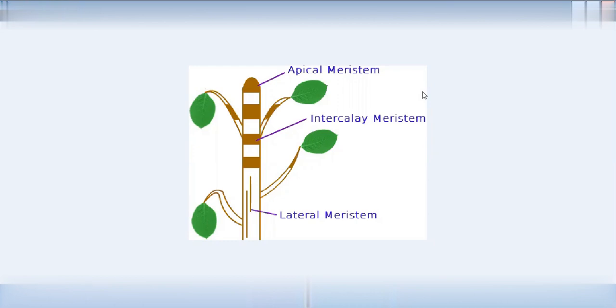We will start with plant tissues. Plant tissues are two different types: one is Meristematic Tissue, and one is Permanent Tissue. Meristematic tissue has a continuous division capacity. These cells are immature, while permanent tissue has mature cells. This repeated mitotic division helps the plant body development and differentiation.